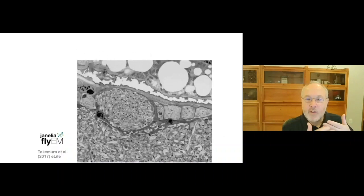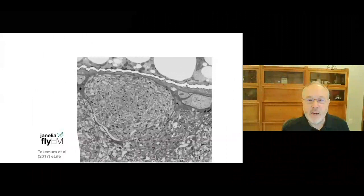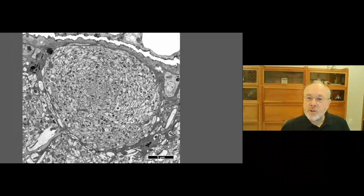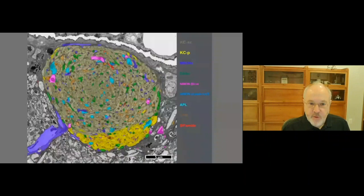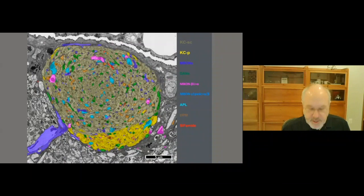Here's a movie going through a Z series of a volume collected in this way from a project we completed four years ago to give you a feeling of what the data actually looks like. Here's one slice of that image volume. Our goal here was not to trace individual neurons, but to reconstruct all the neurons simultaneously to generate an image like this, where all the processes have been assigned to an identified cell type.